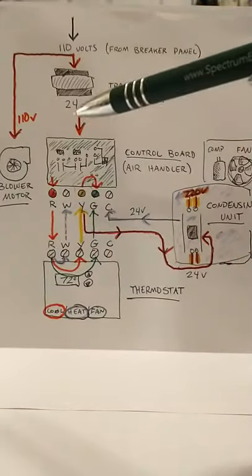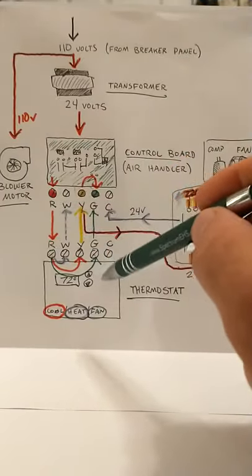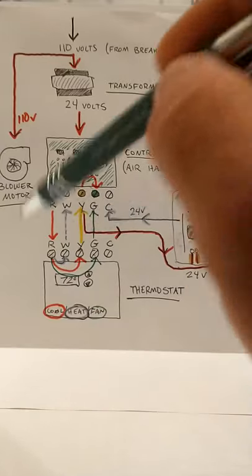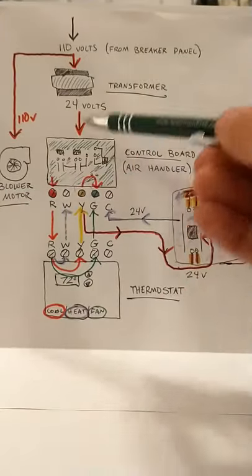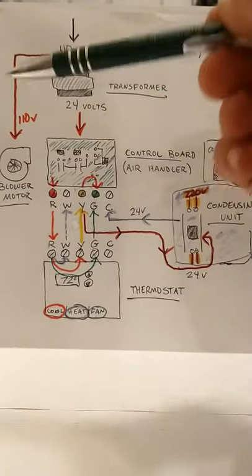For example, some thermostats you will have not just an R terminal. You have RC and RH, one for cooling, one for heating. Usually those are put in there because sometimes you'll actually have two completely separate systems.